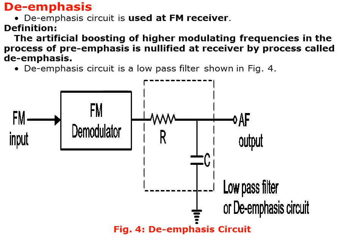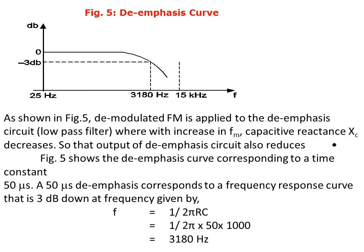Pre-emphasis is used at the FM transmitter as shown in the block diagram. De-emphasis circuit is used at the FM receiver. The artificial boosting of higher modulating frequencies introduced by pre-emphasis is nullified at the receiver by the process called de-emphasis. The de-emphasis circuit is a low pass filter. The demodulated FM is applied to the de-emphasis circuit, where with an increase in frequency, capacitive reactance decreases and the output of de-emphasis is also reduced. This curve shows the de-emphasis curve corresponding to a time constant of 50 microseconds.